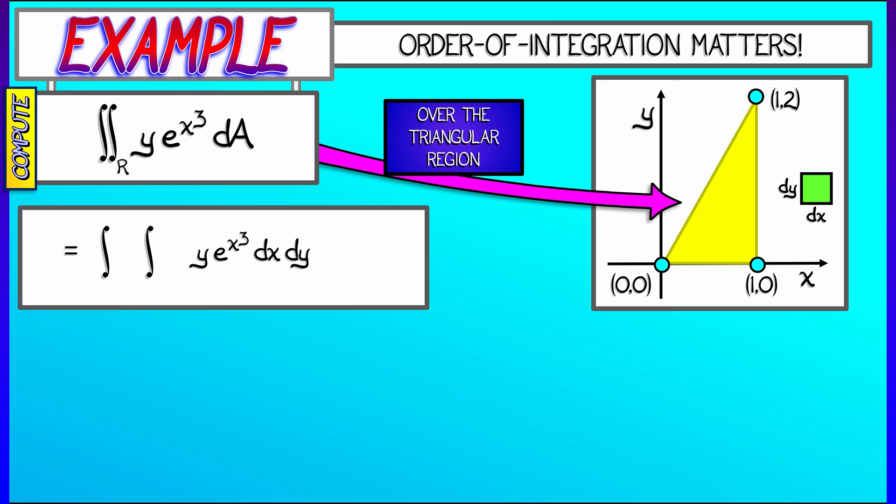Now, what do we do in this case? This means that we fix a value of y and then sweep x from left to right. I'm going to have to figure out the left-hand limit of integration by looking at the equation for that straight line, y equals 2x. Solving for x, that gives me x equals y over 2 for the lower limit on x, and obviously x equals 1 for the upper limit.